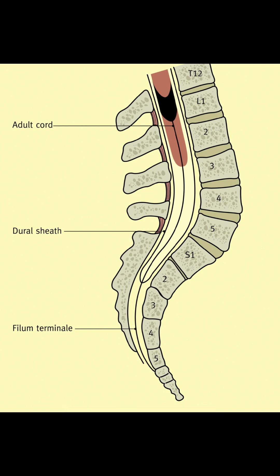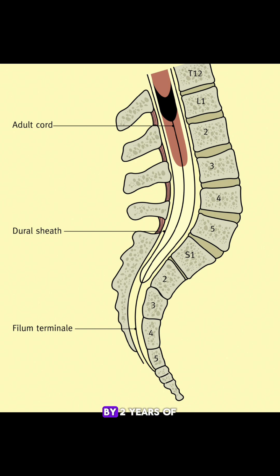1. The spinal cord at birth ends at the upper border of L3. 2. By 2 years of age, it reaches the lower border of L1.